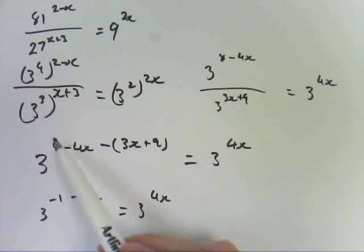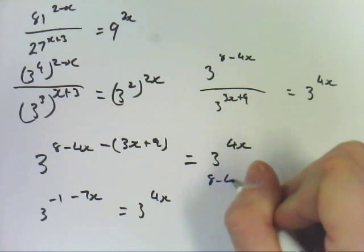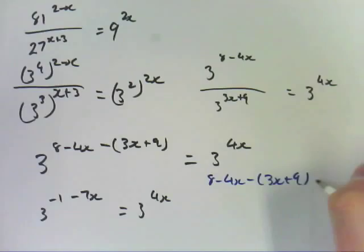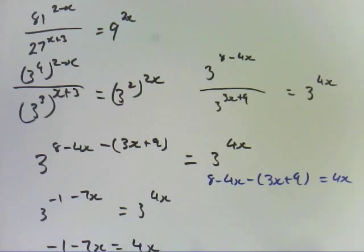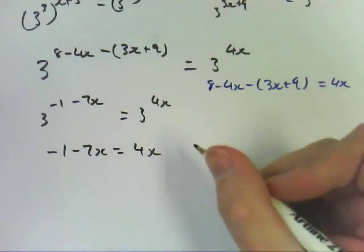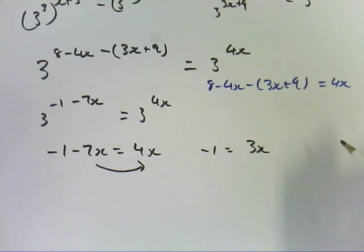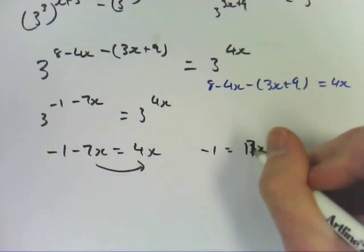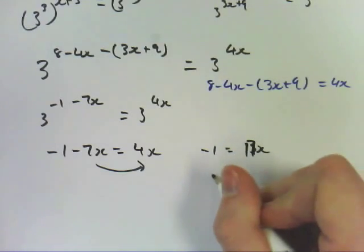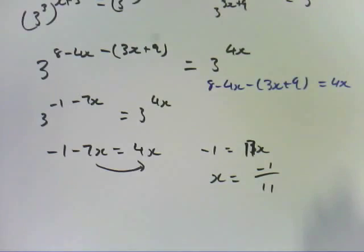Technically speaking, at this stage here, we could have just gone straight to 8 minus 4x minus 3x plus 9 has to equal 4x. Because our bases are the same. But we are now at minus 1 minus 7x equals 4x. So, if we simplify that, we're going to bring this over here. Minus 1 equals 11x. My maths is awesome. So, therefore, x equals negative 1 over 11. Which is actually the answer in the book, which is awesome.